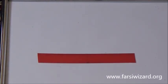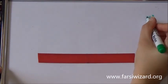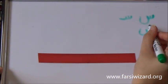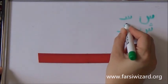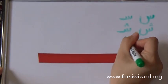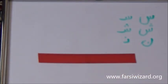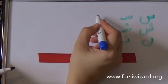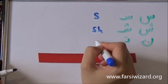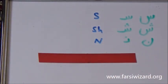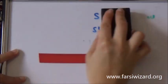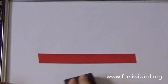Here we have sin, shin, and nun. These are the letters that you learned today. You learned how to write a couple of words with them. And now if you see them anywhere, you can recognize them and you can read them.